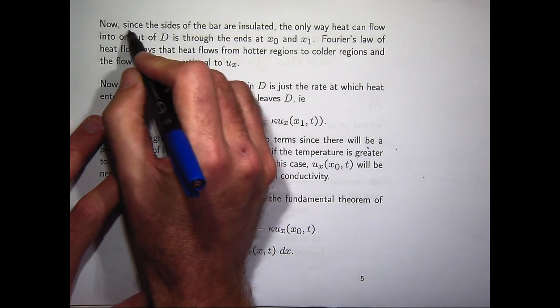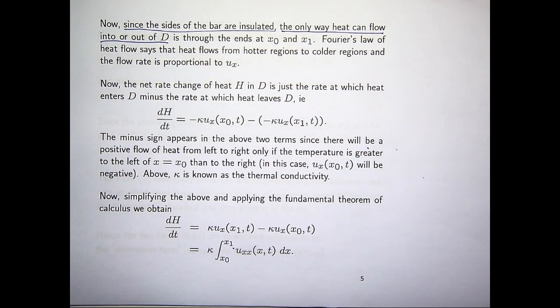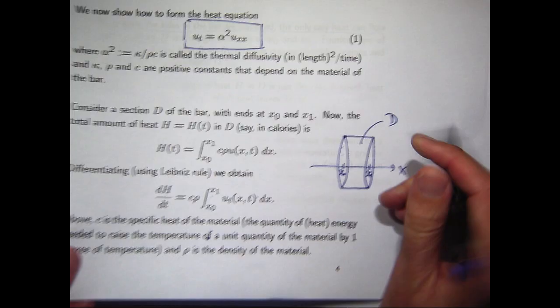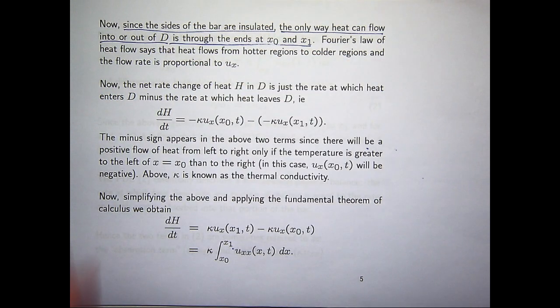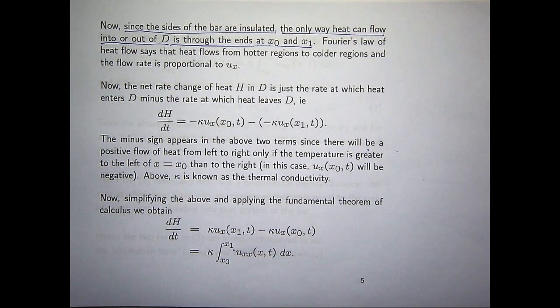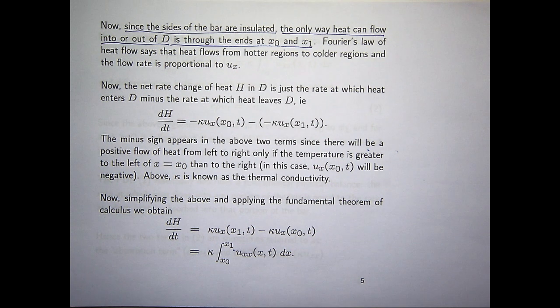Now, this second part involves a law of heat flow called Fourier's law. Well, under our assumptions, the sides of the bar are insulated. So the only way that heat can flow in or out of D is through this side, through the ends, so to speak. Now, Fourier introduced the following law of heat flow. Fourier said that heat flows from hot regions to cold regions. And the flow rate is proportional to this derivative. Now, if we were in higher dimensions here, you would have divergence in there. But for basic one-dimensional flow, this partial derivative is fine, u sub x.